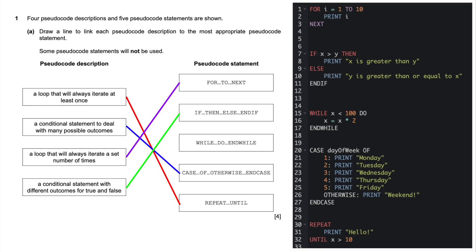Question 1. We've got to marry these up. Four pseudocode descriptions and five pseudocode statements are shown. Draw a line to link each pseudocode description to the most appropriate pseudocode statement. A loop that will always iterate or loop around at least once - that's repeat until. It'll always go around once. Repeat, print hello until x is greater than 10, or x is greater than 1 in this case.